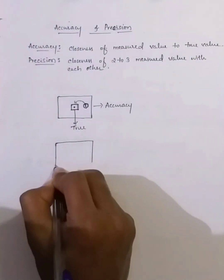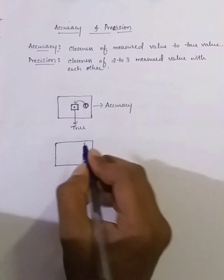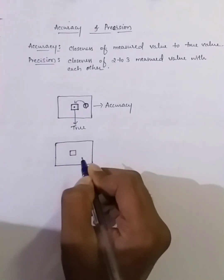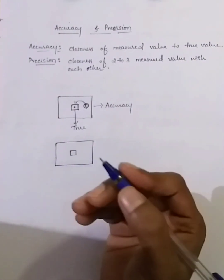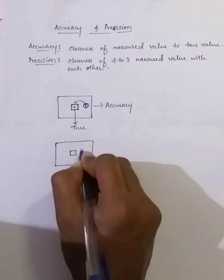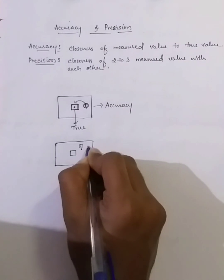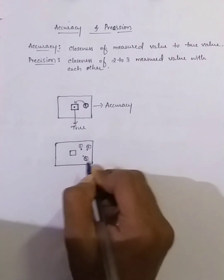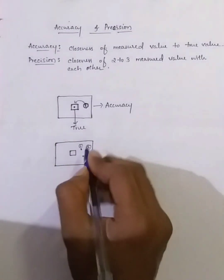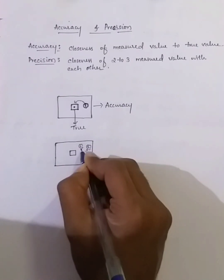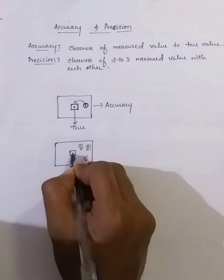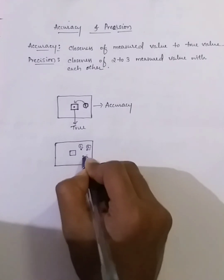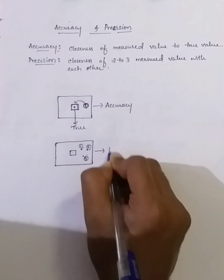Now let's talk about precision. Consider the same example with a bullseye. You will hit so many arrows — consider two or three arrows. The first arrow hits here, the second arrow hits here, and the third arrow hits here. You compare each arrow with each other — you are not comparing with the true value, you are comparing the values you got with each other. This is precision.